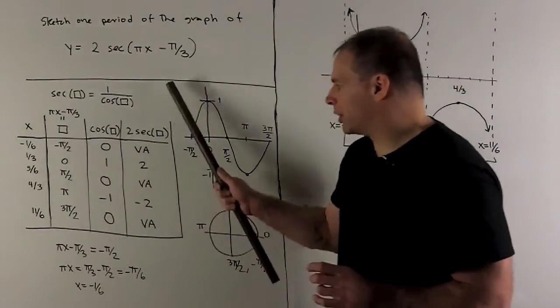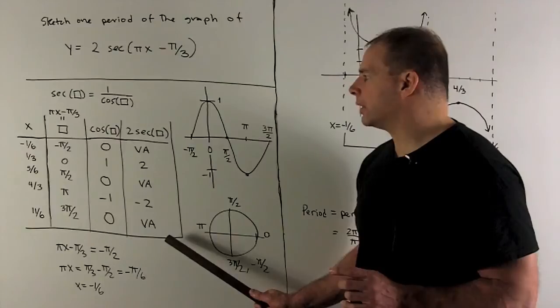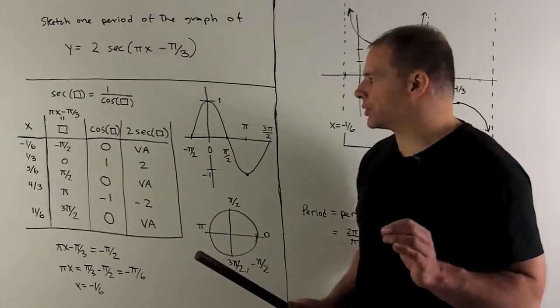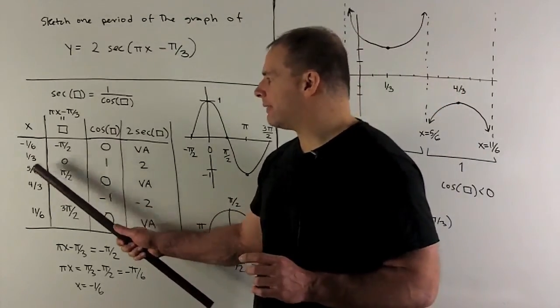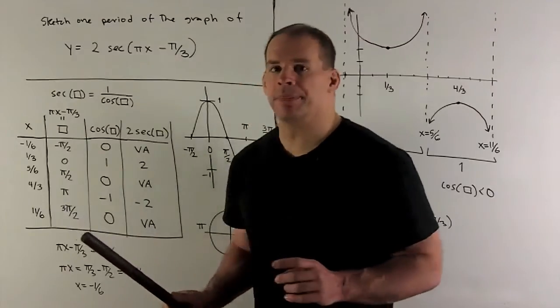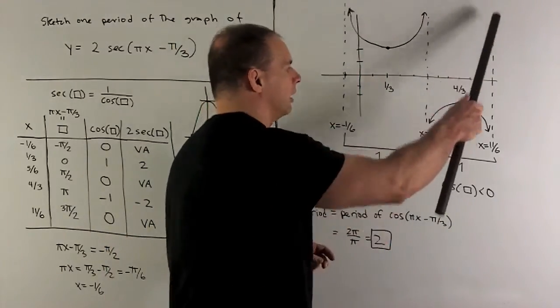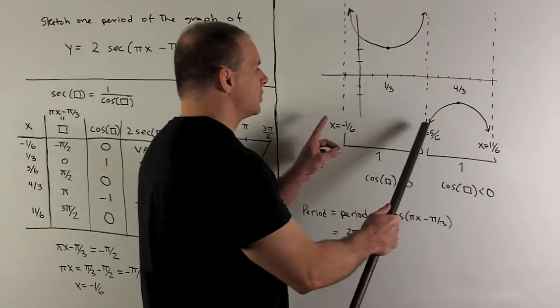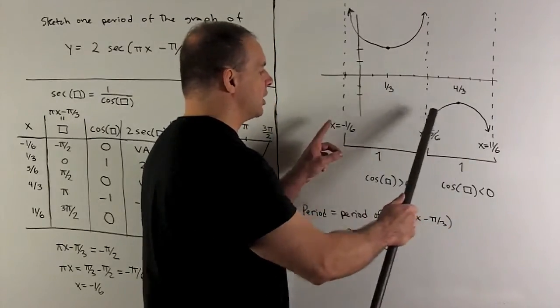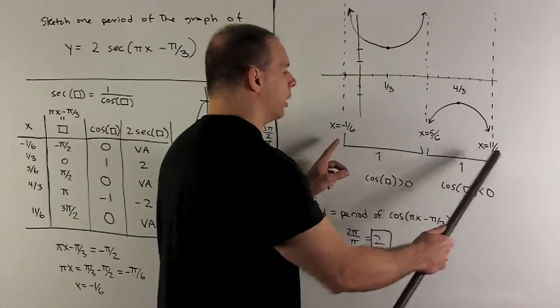So now we have what we want: these are the x-values we use, these are the values that come out. We have three vertical asymptotes: -1/6, 5/6, 11/6. We plot them here, here, and here. You'll note the distance between each of these is exactly one.